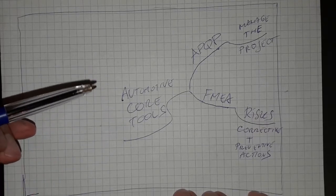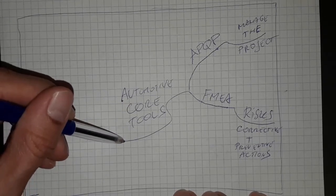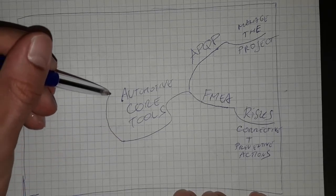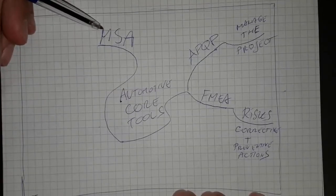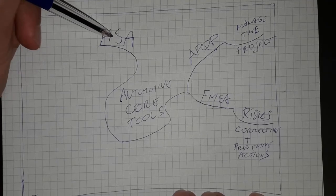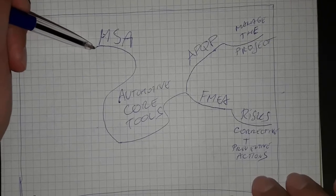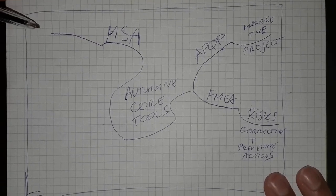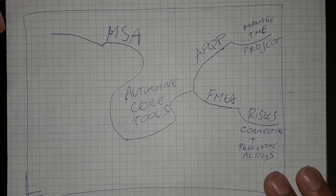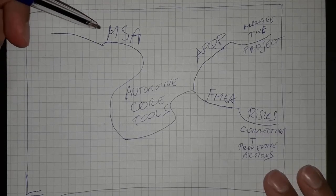The next automotive core tool is MSA — Measurement System Analysis. This is the methodology to know that whatever I measure is valid. I need to measure data to be sure that I am making something right, and I need to have data about the measurements.